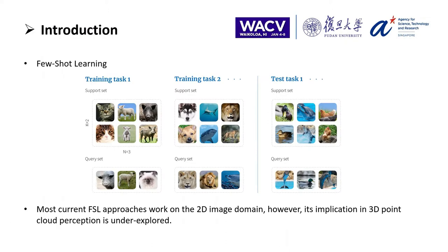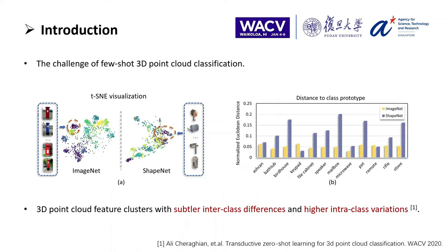We humans can quickly recognize new classes by looking at a few examples, which motivates the recent popularity of few-shot learning. Most current few-shot learning methods work on the 2D image domain. However, its implication in 3D point cloud perception is unexplored. In this work, we study 3D few-shot learning systematically for the first time with extended experiments and discussions.